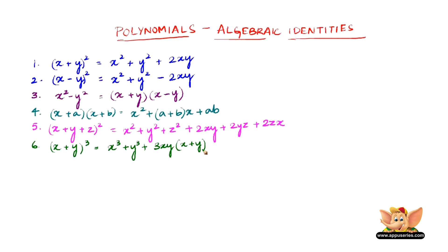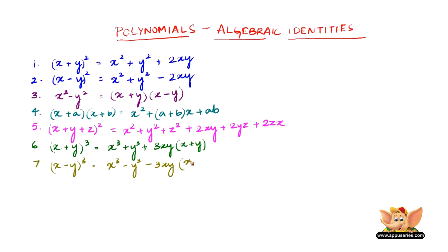Identity 7 is (x minus y) whole cube, which equals x cube minus y cube minus 3xy into (x minus y).